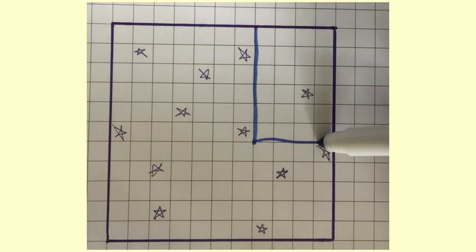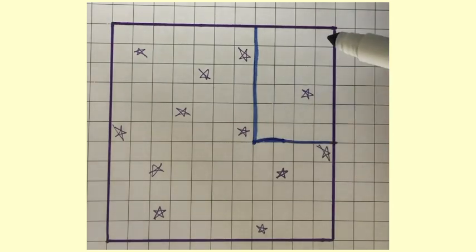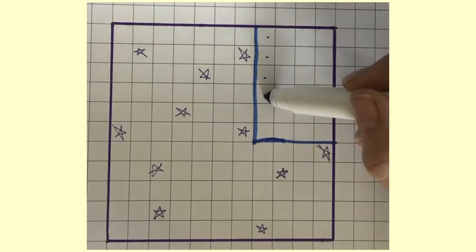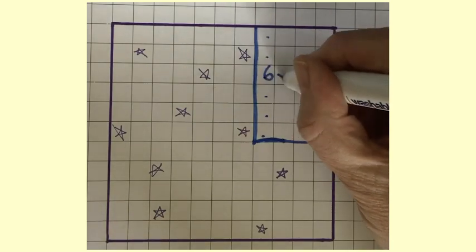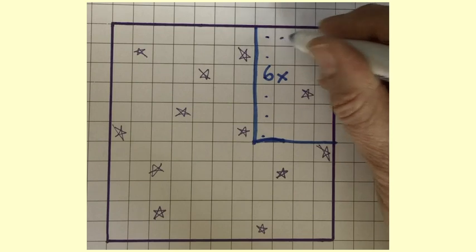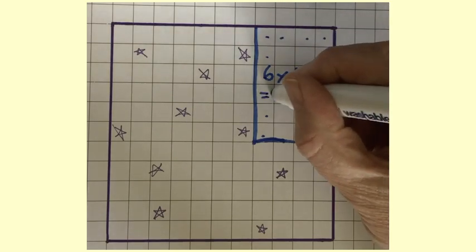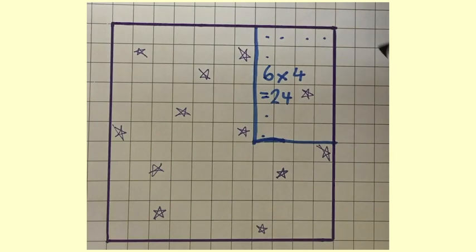Now the first player is blue and draws two lines at right angles to each other, though they don't have to be at right angles, and counts how many squares there are. So you can see that there are six rows and four columns. So this is six times four, which is 24, which blue adds to their score in the scoring list.